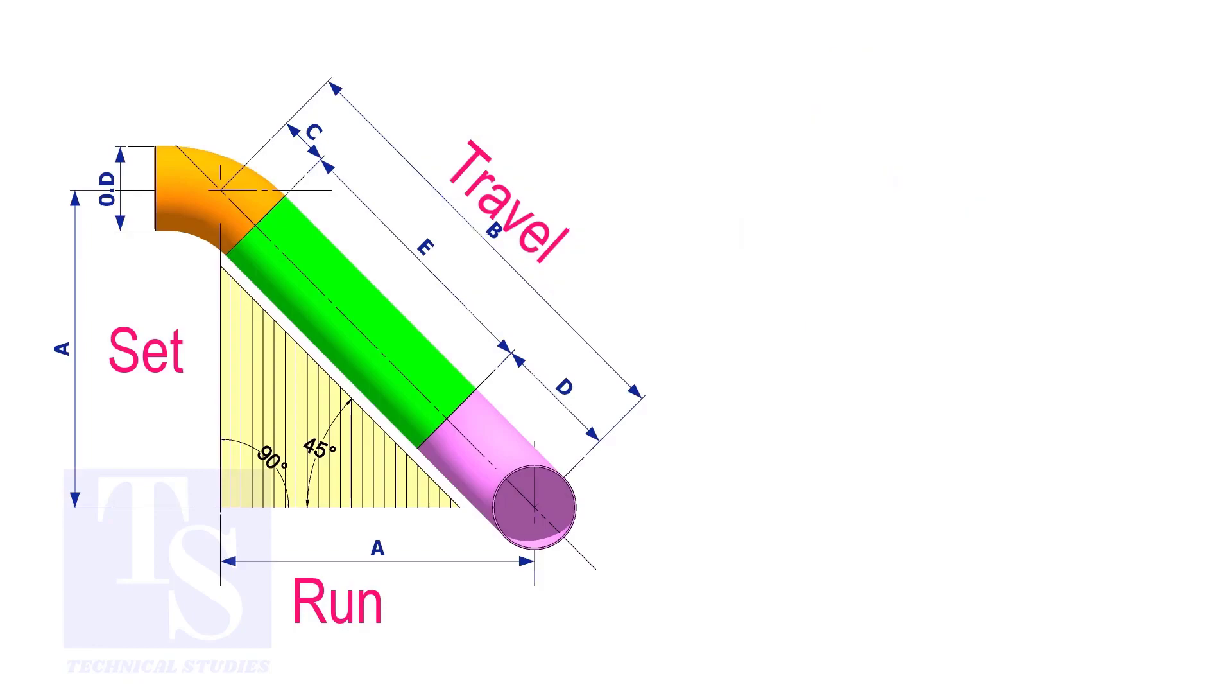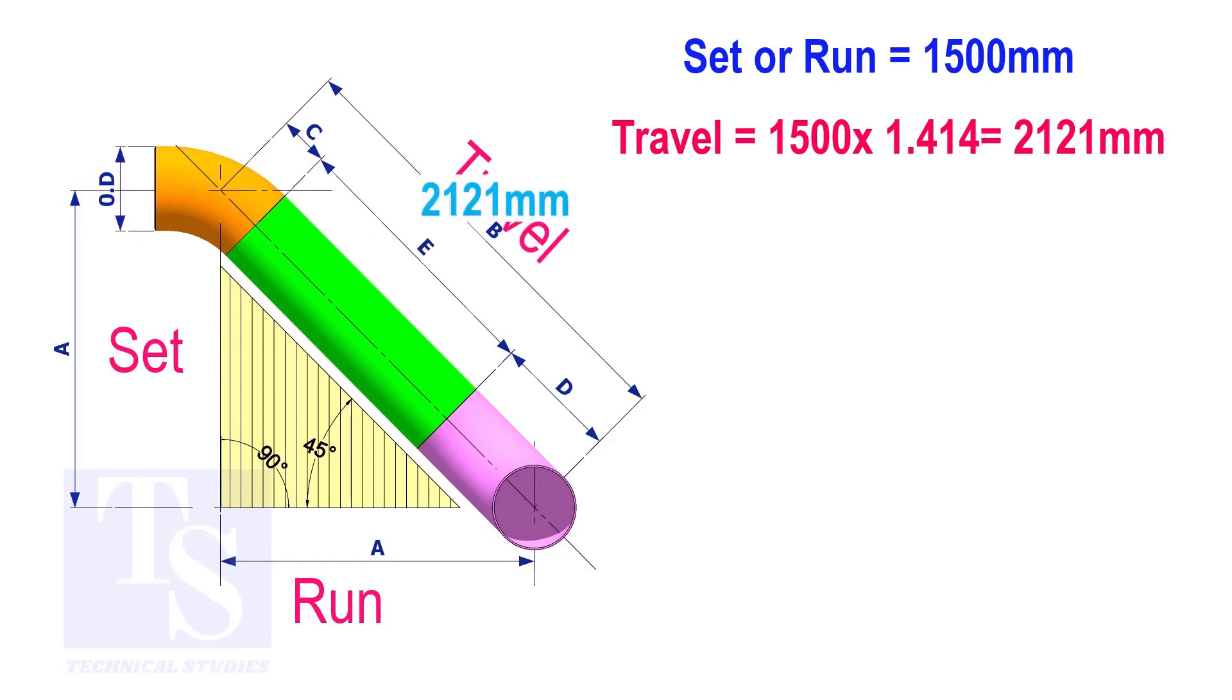Try another example. Suppose the value of the set or the run is 1500 millimeters. The value of the travel will be 1500 multiplied by 1.414 equals 2121 millimeters.